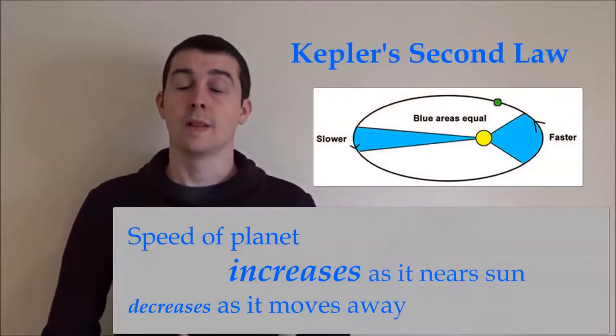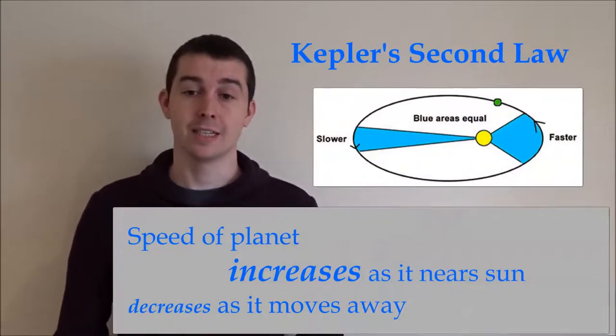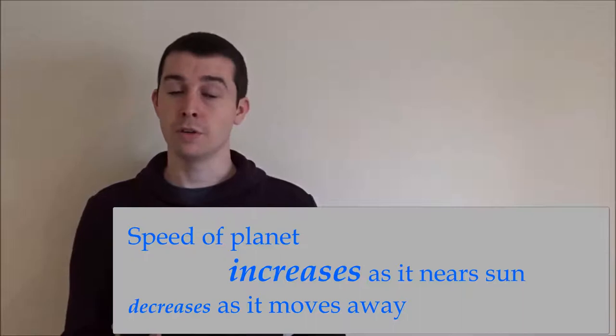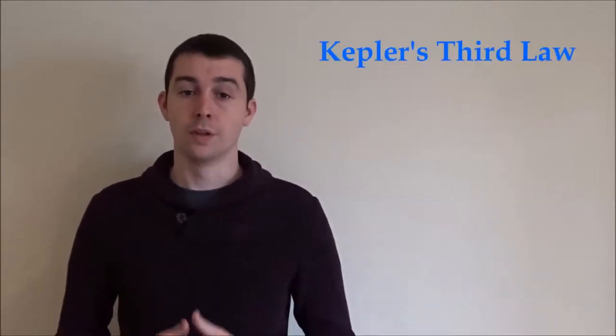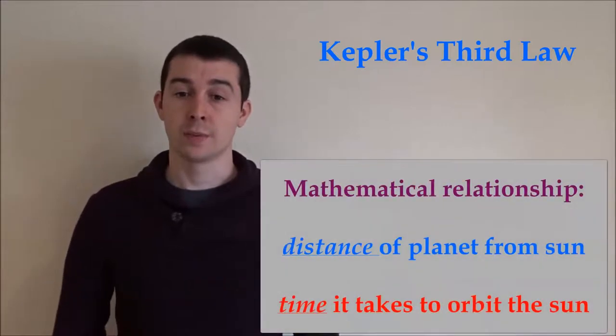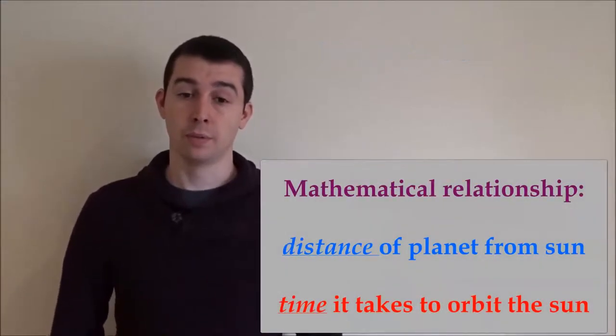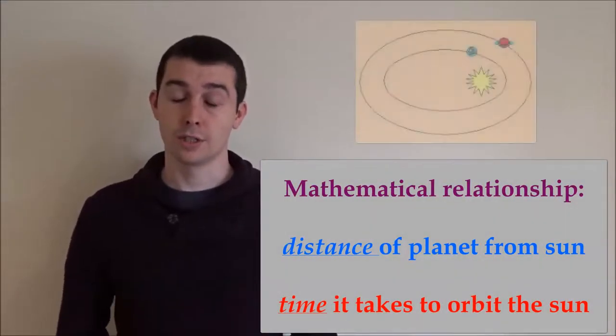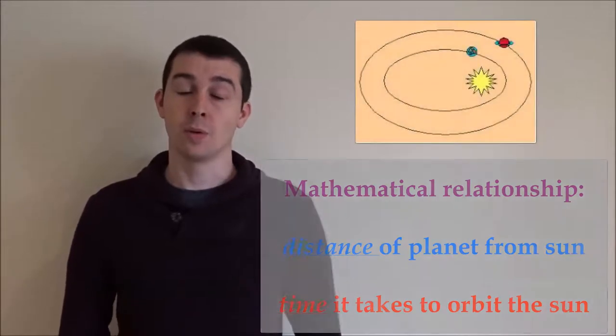The second law states that the speed of a planet increases as it nears the sun and decreases as it moves away from the sun. The third law shows that there is a precise mathematical relationship between a planet's distance from the sun and the time it takes to orbit the sun.